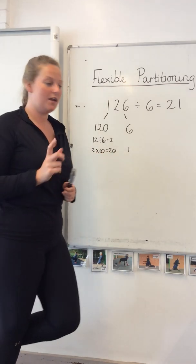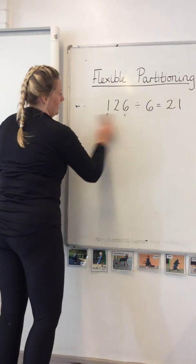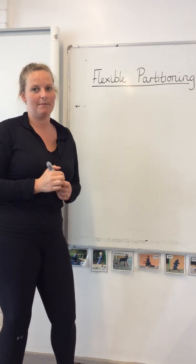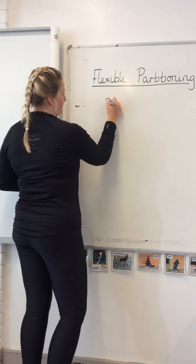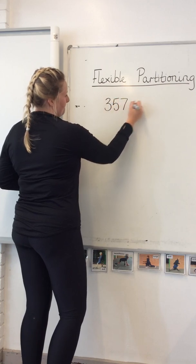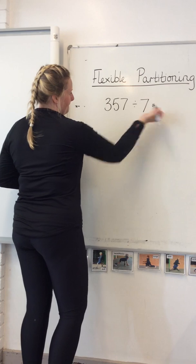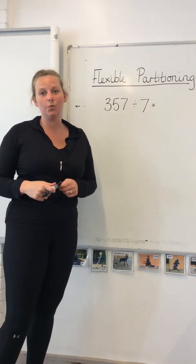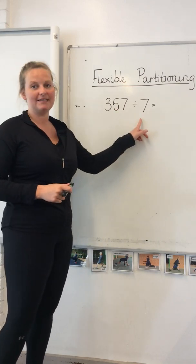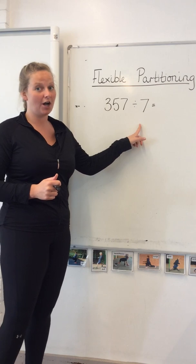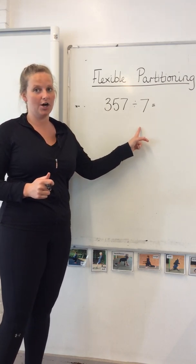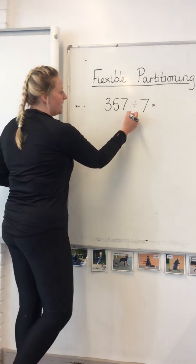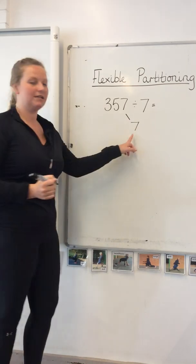I'm going to come up with another question now and see if you can do it alongside me. I'm going to have a look to see if I can use my hundreds, tens and ones partitioning technique. 7 divided by 7 I can do, 5 divided by 7 I can't do, 3 divided by 7 I can't do. Have a little think about how you might partition this number now. I'm definitely going to partition my 1s because I know that works.